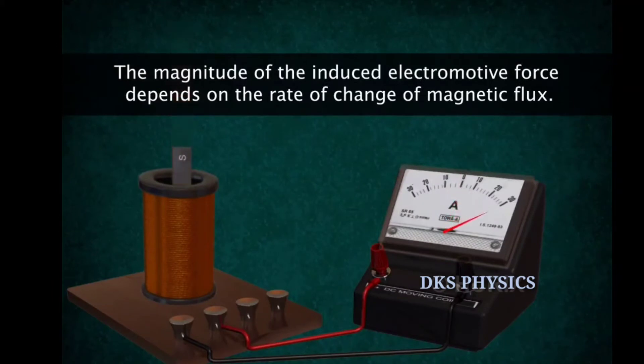When the magnet moves fast, the galvanometer shows high current. When the magnet moves slowly, the galvanometer shows lower current.